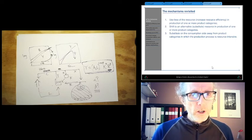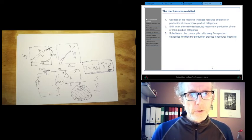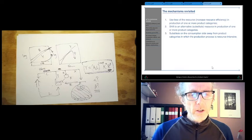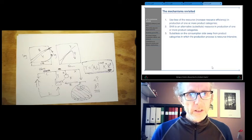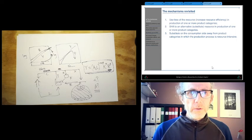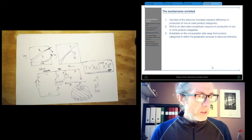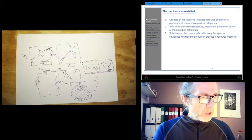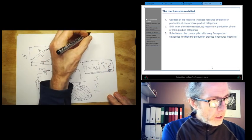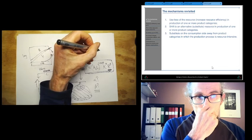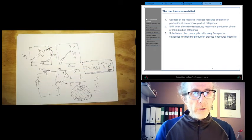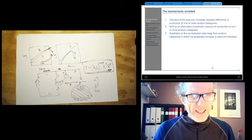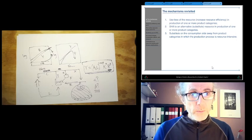So mechanism one: use less of the resource in production of one or more product categories. That's less resource per unit produced. So what we want to do is, and what we're particularly interested in, is technological change which makes that easier.